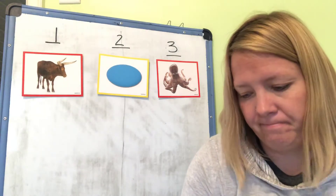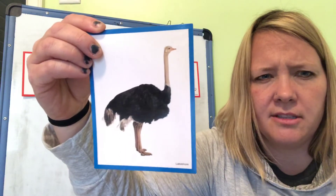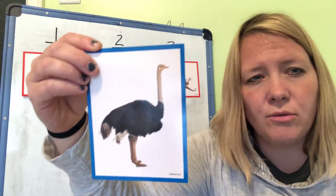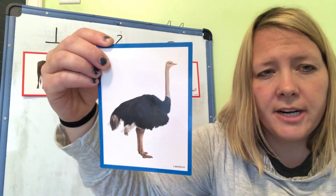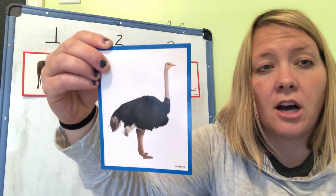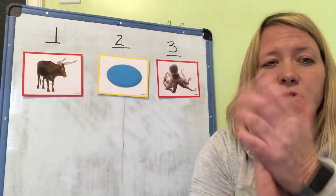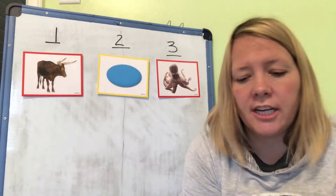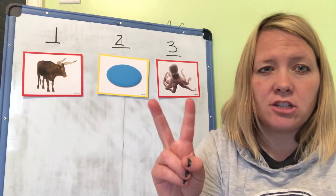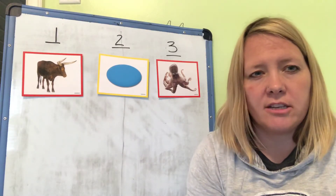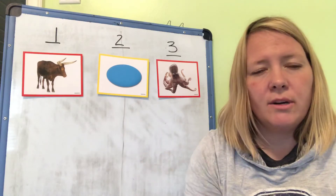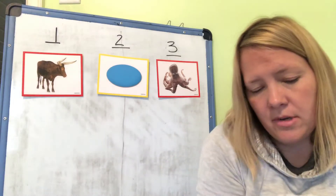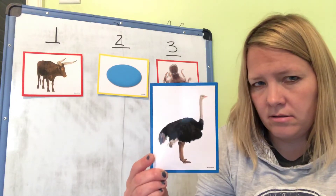Alright, next one. This is a type of bird. Do you know what type of bird this is? It's an ostrich. Here we go. Syllables, syllables, one, two, three. Break words into parts with me. Say it with me — ostrich. Clap it with me — ostrich. Stomp it with me — ostrich. Whisper it with me — ostrich. Count it with me — ostrich. How many syllables are in the word ostrich? Two. What is the first part of the word ostrich? Ah, good job. What number should I hang this under? Two.